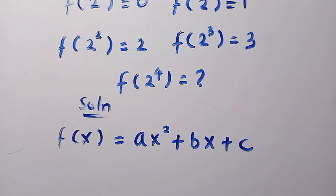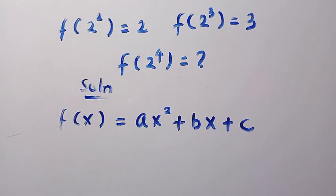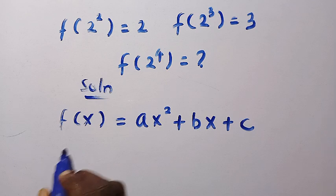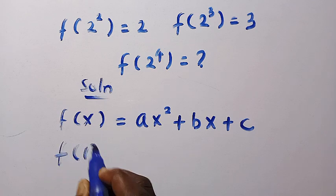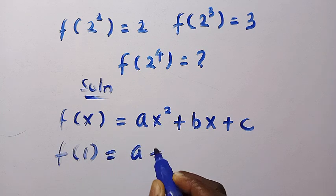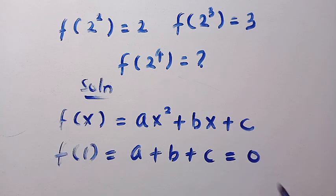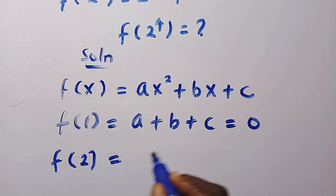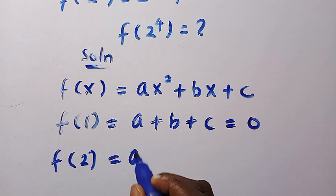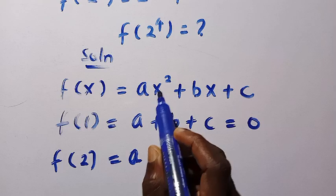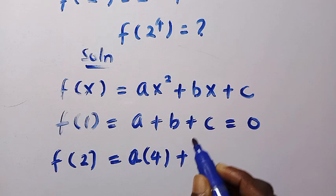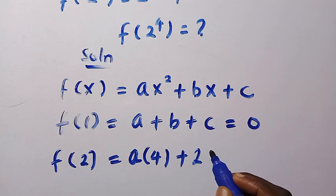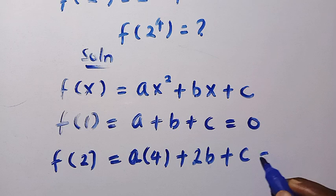Let's start with the first point. At x equals 1, because f of 2 to the power of 0 is just f of 1, we get a plus b plus c equals 0. For the second point, f of 2 to the power of 1 is f of 2, we have a times 2 squared, which is 4a, plus 2b plus c equals 1.